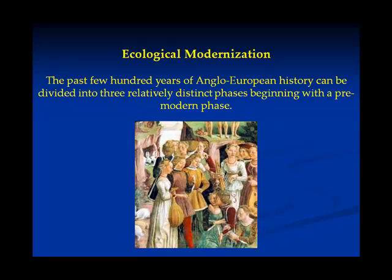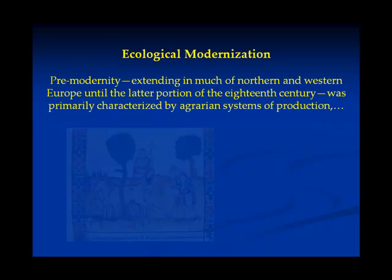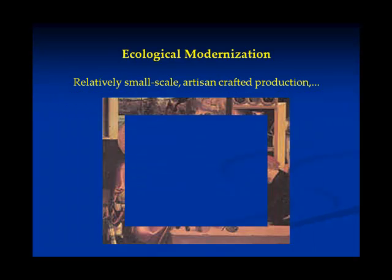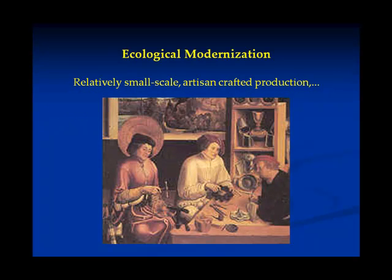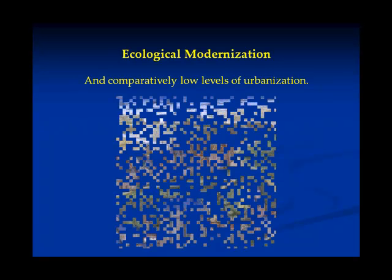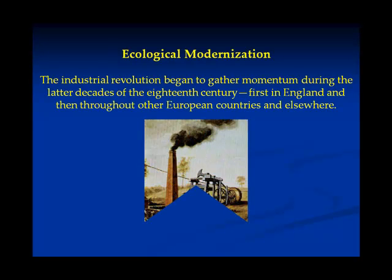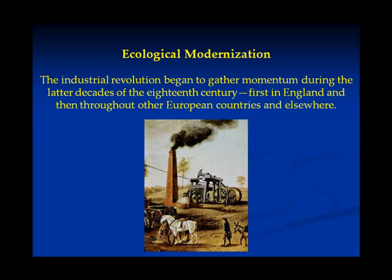The past few hundred years of Anglo-European history can be divided into three relatively distinct phases, beginning with a pre-modern phase. Pre-modernity, extending in much of northern and western Europe until the latter portion of the 18th century, was primarily characterized by agrarian systems of production, relatively small-scale artisan crafted production, and comparatively low levels of urbanization. The Industrial Revolution began to gather momentum during the latter decades of the 18th century, first in England, and then throughout other European countries, and eventually elsewhere.